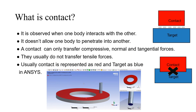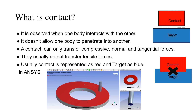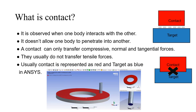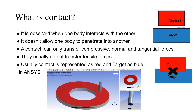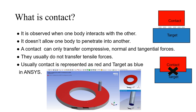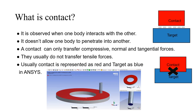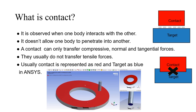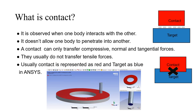Hi guys, welcome to this channel Simoninja. Today I'm covering another video about ANSYS contact types. Contact occurs whenever one body interacts with another. The specialty of a mechanical contact is that it does not allow one body to penetrate into another. Contact can only transfer compressive normal and tangential forces — it cannot transfer tensile forces.